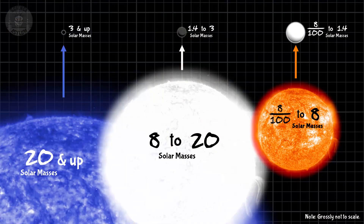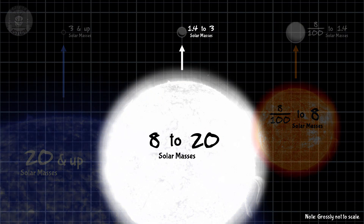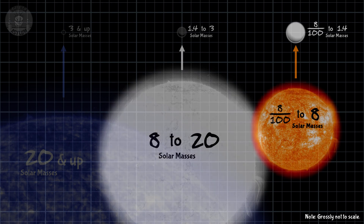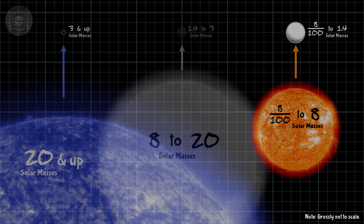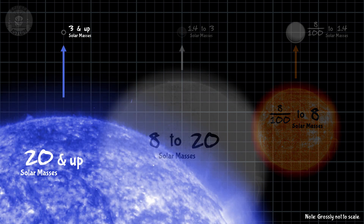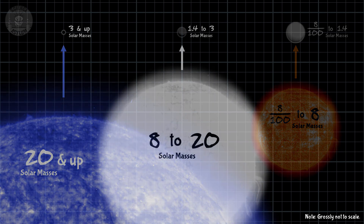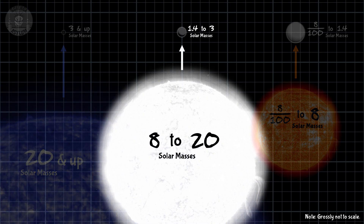As you can see from this chart, the original star that makes a neutron star needs to have at least 8 times the mass of our Sun. Anything less and it'll only make a white dwarf. Anything more than 20 and it becomes a black hole. Neutron stars are the sweet spot in between.